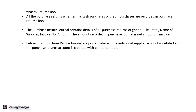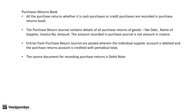The purchase return entry is the reverse of the purchase entry. The entry will be supplier's or creditor's account debit to purchase return account. All purchase returns are recorded in the purchase return day book, the individual supplier's account is debited on a day-to-day basis, whereas the purchase return account — a ledger account — is credited with the periodical total, either daily, weekly, fortnightly, or monthly. The source document for recording a purchase return is a debit note.